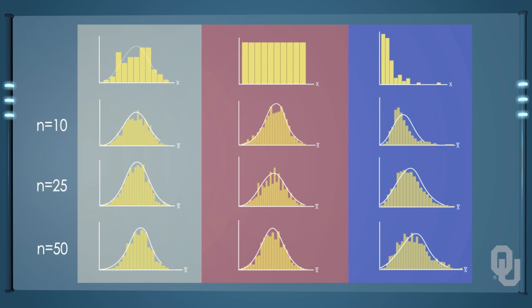Here are three examples of very different population distributions. We can watch the evolution of the sampling distribution as the size of the sample increases. Remember that the standard deviation of the sampling distribution is sigma divided by the square root of n, the sample size. This means that as the sample size increases, the standard deviation decreases and the sampling distribution becomes more like the normal distribution.